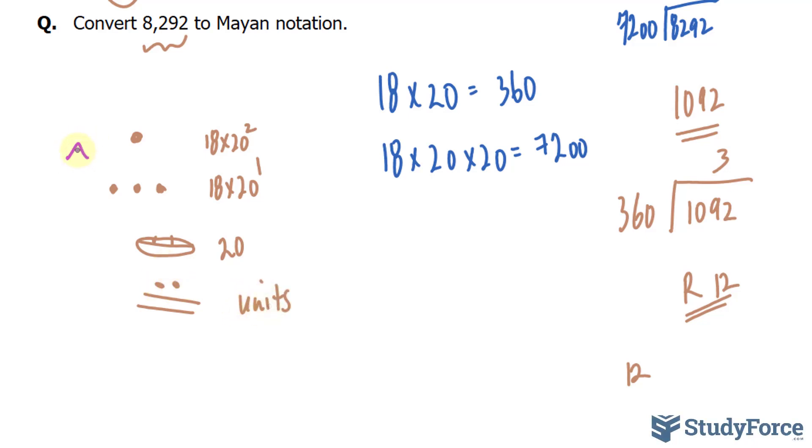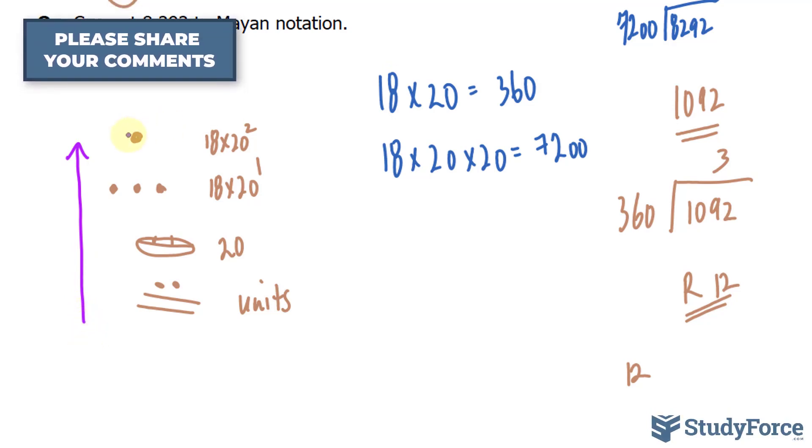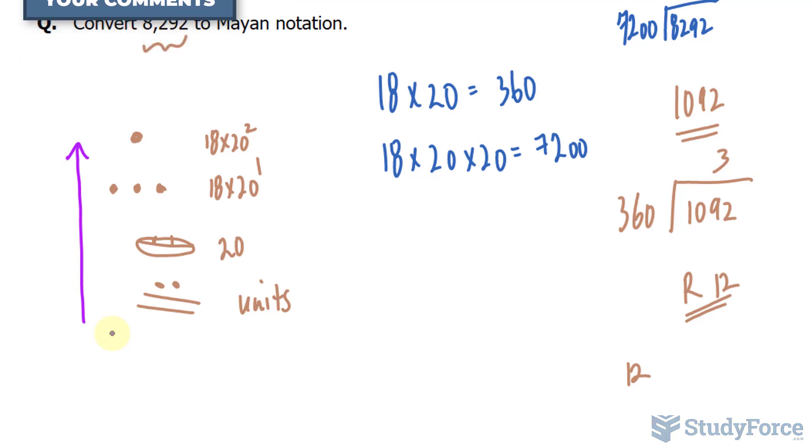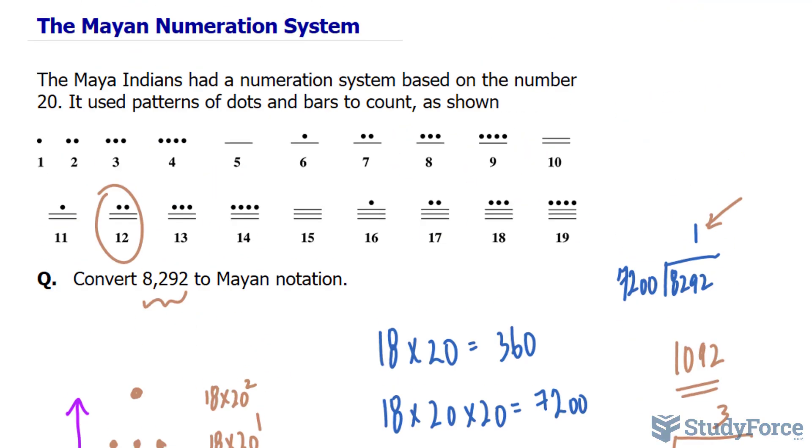As you can see, the numbers are written vertically from highest to lowest. Adding this all up gives us 8,292. And so there you have it. That is the Mayan numeration system. If you have any questions or would like to convert one of your own, leave it in the comment section below and we'll gladly help you.